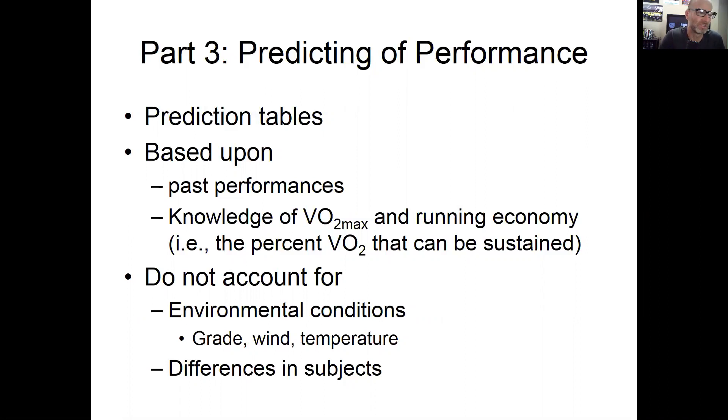In Chapter 2, Noakes goes through prediction tables primarily. The prediction tables are all based upon past performances. Different authors have collected data from different athletes, aggregated those data, and created different tables predicting performance. They vary a bit based on different assumptions the authors make and the type of athlete they're looking at. In some sense they're helpful and accurate, and in others they may be off target a little bit.